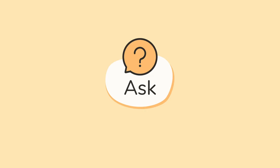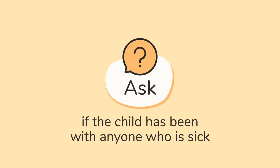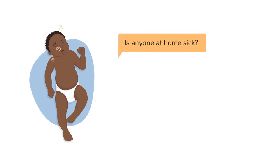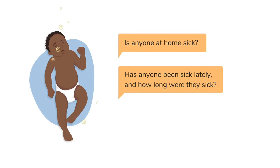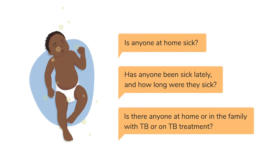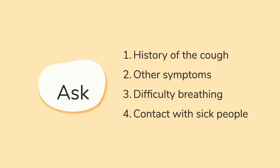Lastly, number four — find out if the child has been with anyone who is sick. You can ask: Is anyone at home sick? Has anyone been sick lately and how long were they sick? Is there anyone at home or in the family with TB or on TB treatment? If the child is in contact with someone who is sick or has TB, they may get infected too. The answers to all these questions will help you understand the child's signs and symptoms and how severe they may be.